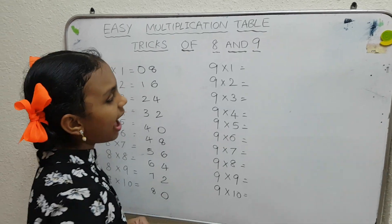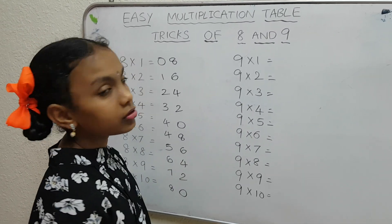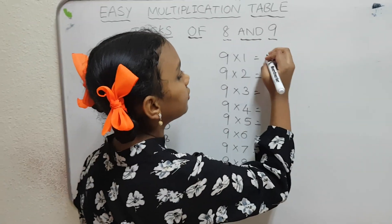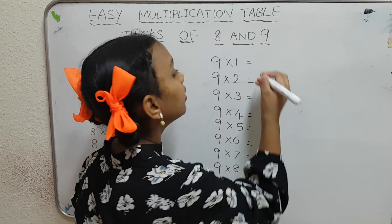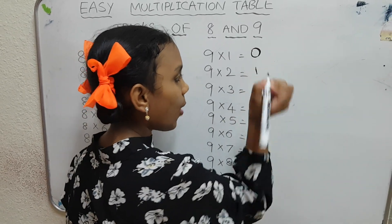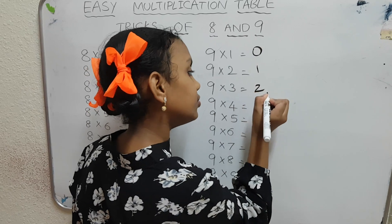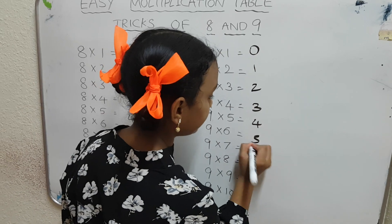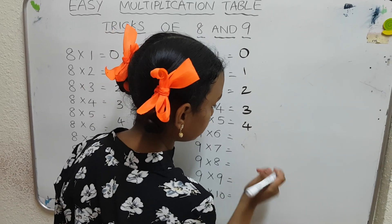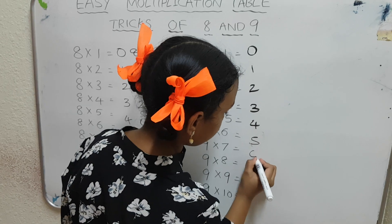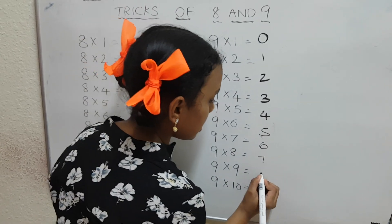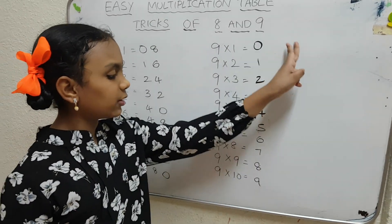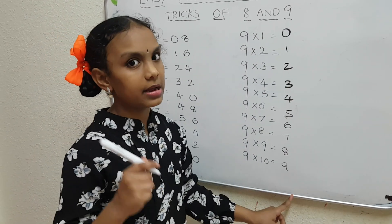So here we have the 9 table. This is an easy trick — not as hard as the 8 table. So always start with 0, guys, don't forget that. 0, 1, 2, 3, 4, 5, 6, 7, 8, 9. We filled up to 9 numbers. So always put 0 — that's the important part.